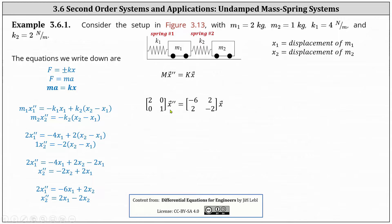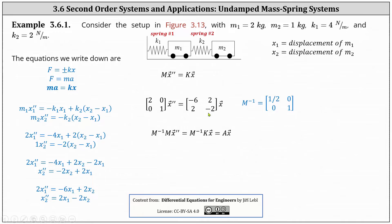Now we solve for vector x double prime by multiplying both sides by the inverse of matrix M. Because matrix M is a diagonal matrix, we find its inverse by taking the reciprocals of the entries along the main diagonal. Multiplying both sides by M inverse and setting M inverse times K equal to matrix A, we have vector x double prime equals matrix A — the two-by-two matrix with entries negative three, one, two, negative two — times vector x.